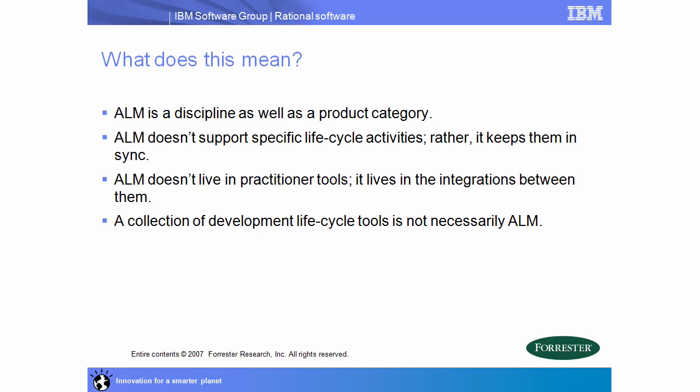The final point here is that a collection of development life cycle tools is not necessarily ALM. ALM involves those three dimensions of process automation, traceability, and reporting. So if you just have a bunch of tools in your organization and you haven't integrated them, and you're not acting on those three dimensions, you essentially have a collection of development tools.